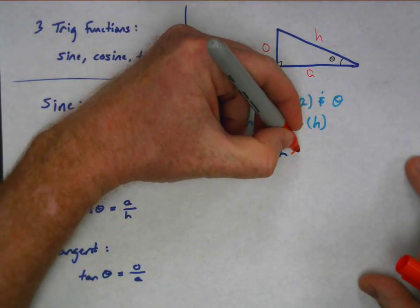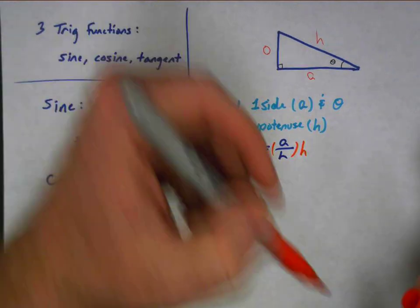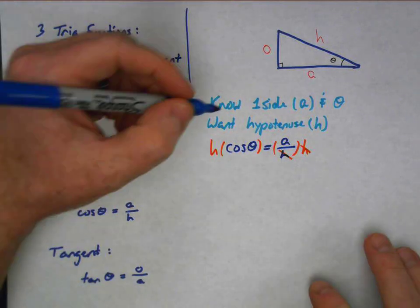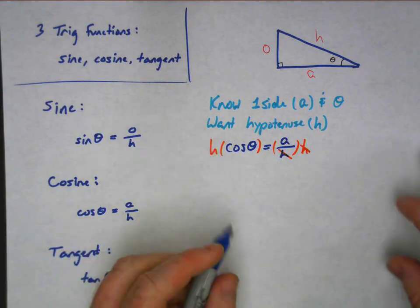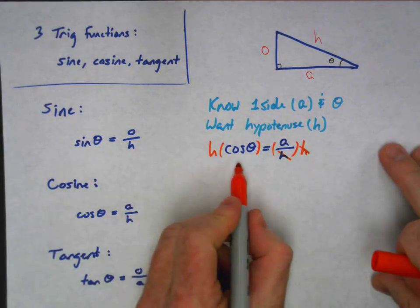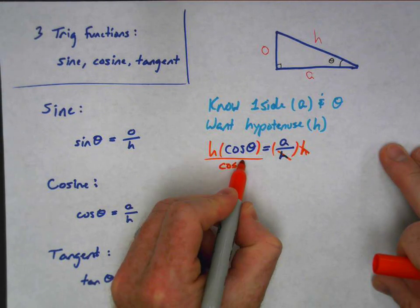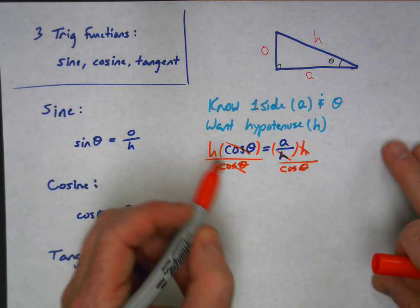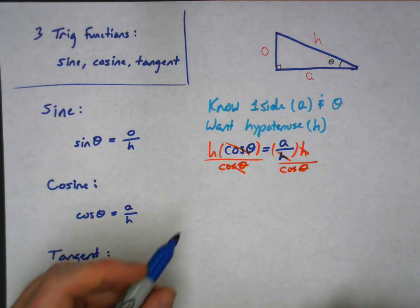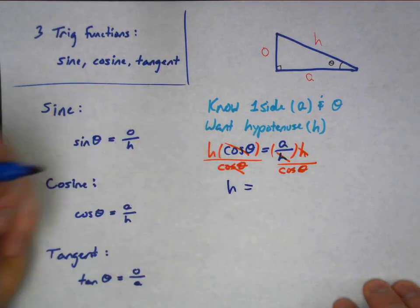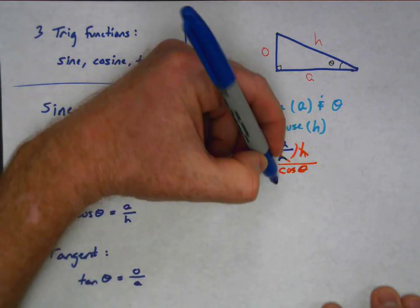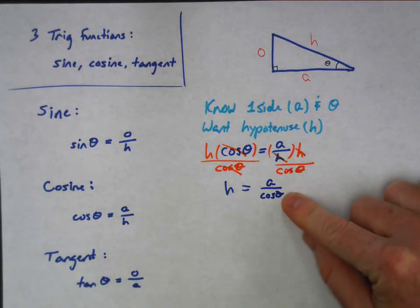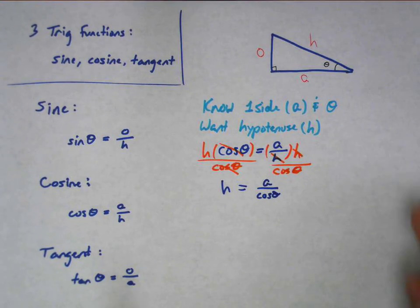So cosine of theta equals A over hypotenuse, and I want the hypotenuse. I have to multiply both sides by H to move it over — that cancels the H on the right side. Then I divide both sides by cosine theta, which cancels out on the left side. What I'm left with is H equals A divided by cosine theta. Since I know A and I know the angle theta, I could easily work this out on my calculator. It's really slick.